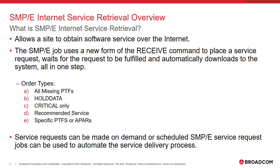CA SMPE Internet Service Retrieval allows a site to obtain maintenance from the internet by running an SMPE job on the mainframe. The SMPE job issues a new form of the receive command to place a service request to the order server, which then goes out to a download server that fulfills the request. This process appears all as one step to the end user. Various types of order requests can be made, including missing PTFs, whole data, critical only, recommended service, and even specific PTFs or APARs can be requested. Service requests can be made on demand or can also be run as scheduled jobs, which allows for a more automated approach to downloading maintenance. Setting up CA SMPE Internet Service Retrieval greatly simplifies the maintenance retrieval process and is a better method than manually going out to Broadcom's support website to download PTFs to then upload and apply to the mainframe.